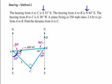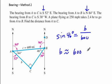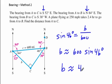To find distance b, we use the sine function. The sine of 46 degrees equals opposite b over hypotenuse 600. So b is approximately 600 times sine of 46 degrees. Using the calculator, we get approximately 431.6 miles.